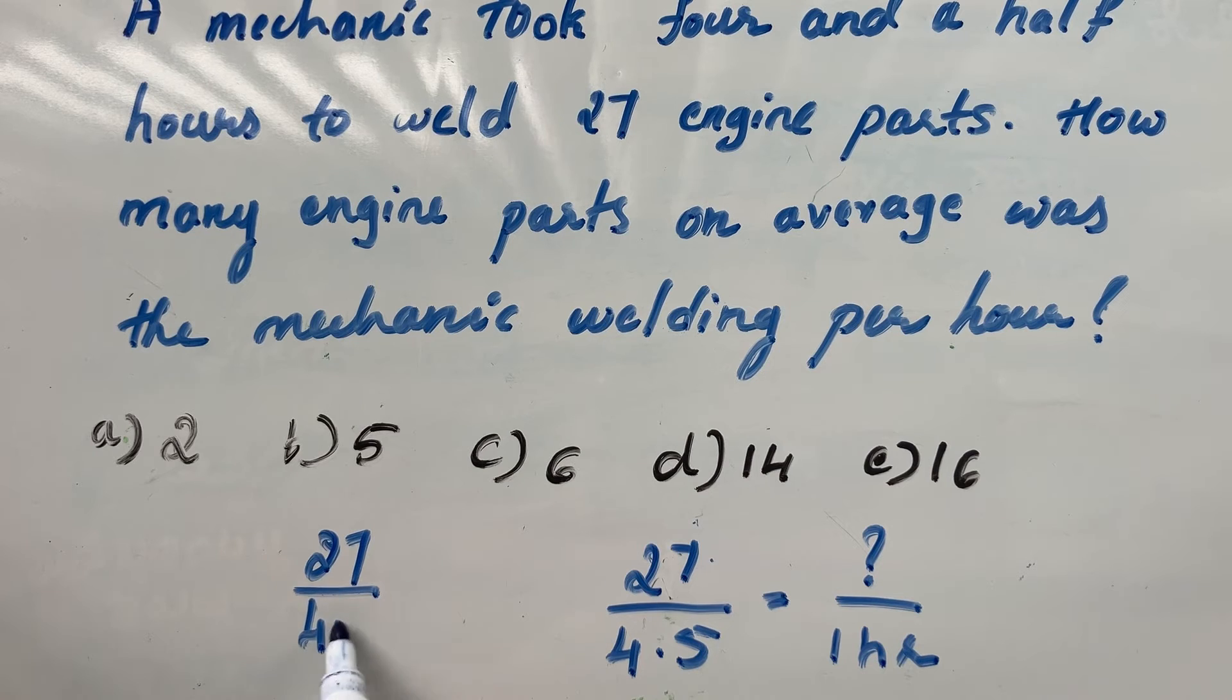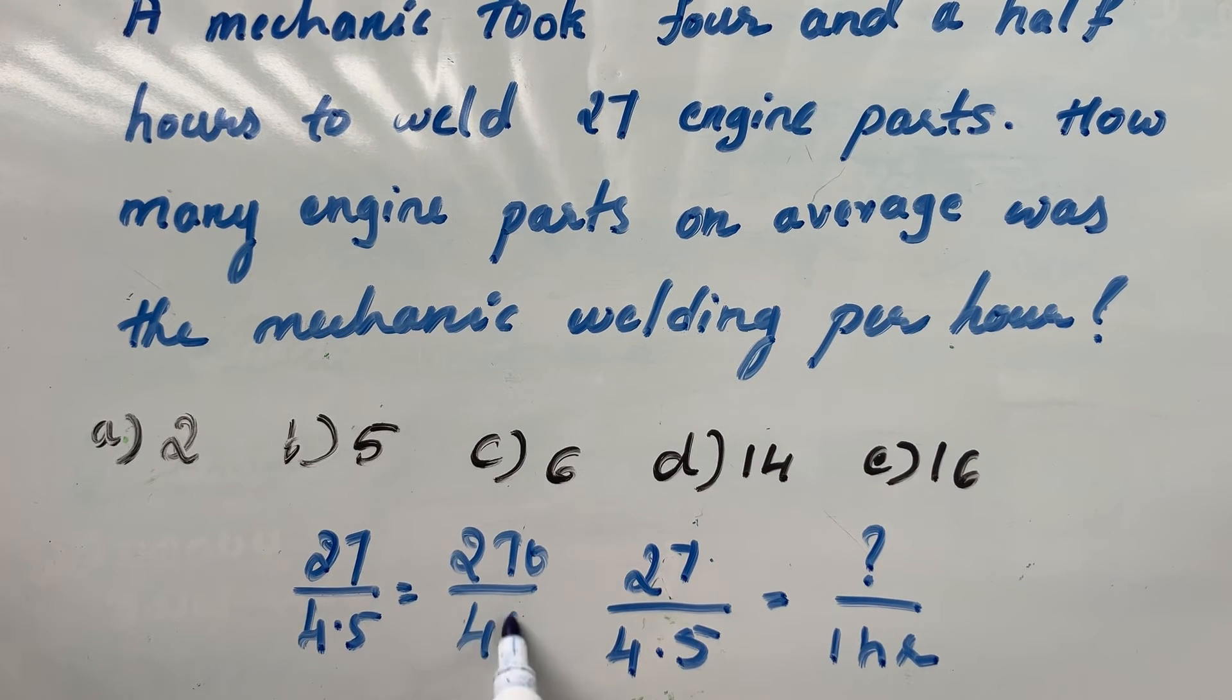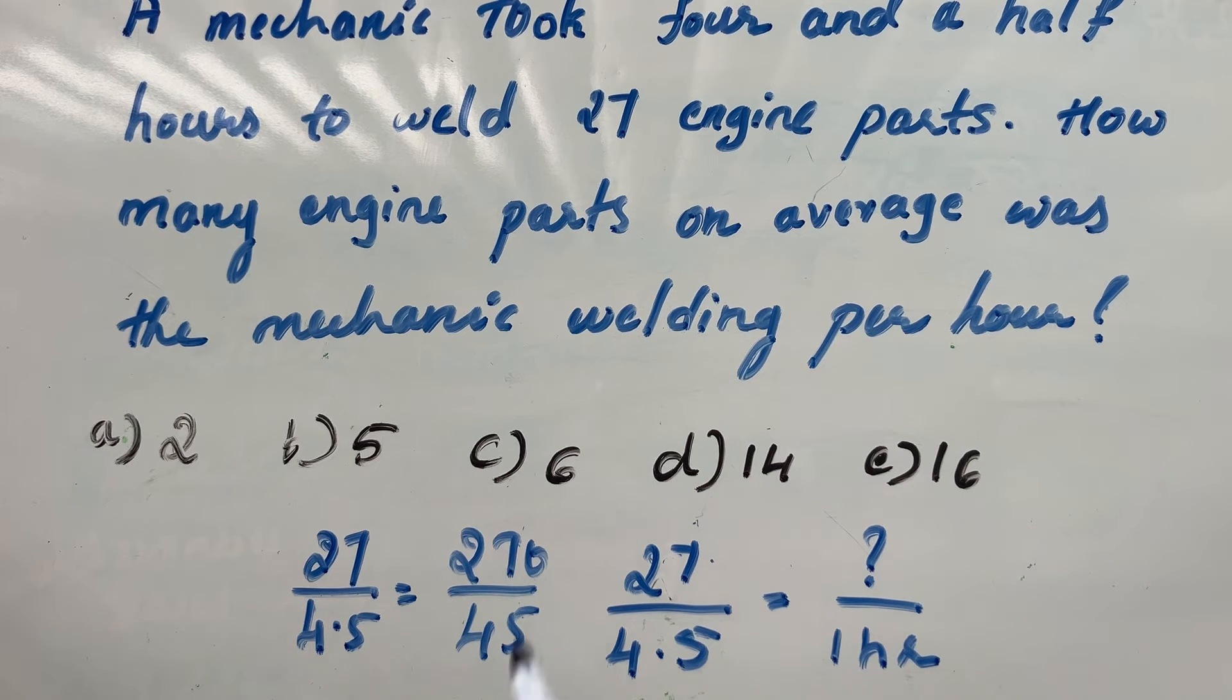27 divided by 4.5, which is nothing but 270 divided by 45. What is 270 divided by 45?